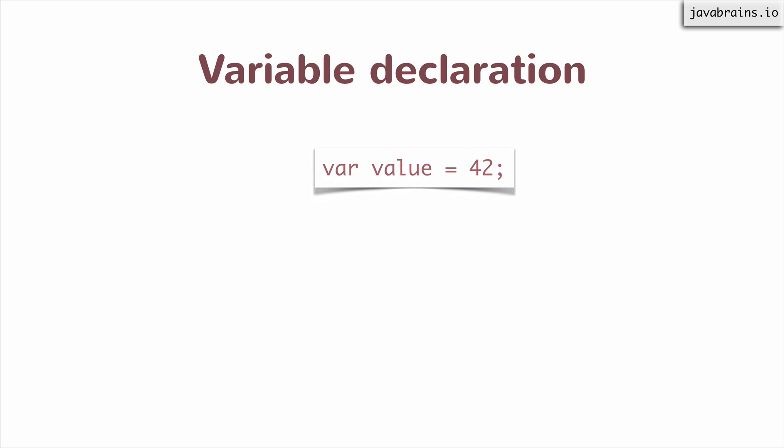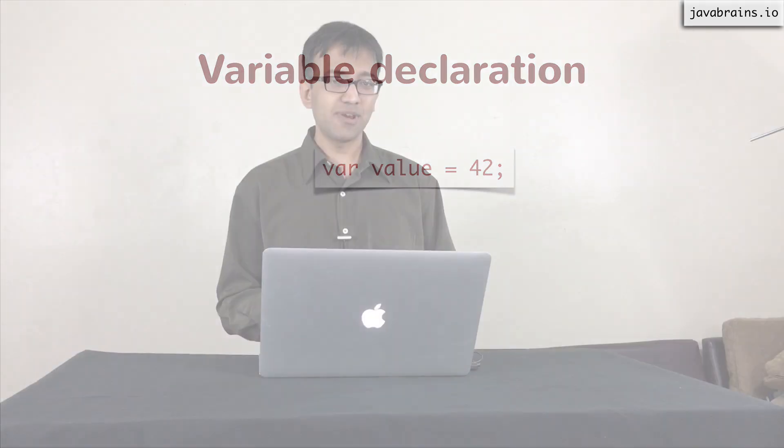Now you might notice that I don't have information about the type of the variable here. I'm not saying int value equals 42. I'm not specifying that this is a number. I'm just saying var value equals 42. If I have to declare a variable for a string, I would say var value equals hello world. So JavaScript does not have the concept of typed variables.